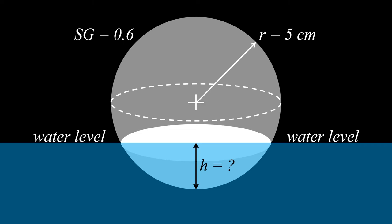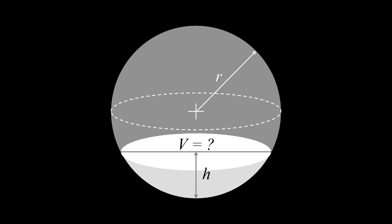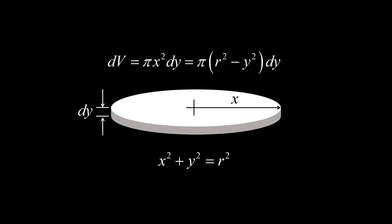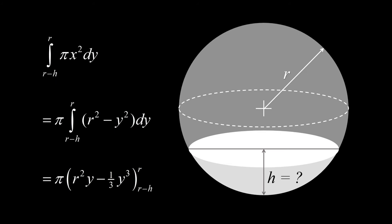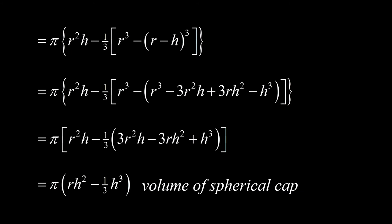Computin muna natin ang volume ng isang spherical cap na may height h. We can do this by slicing the volume into disks with differential thickness dy. Ang differential volume dv ay ang area ng disk times the thickness dy. Ang radius ay x na related kay y at r through the equation for a circle x squared plus y squared equals r squared. Thus, dv equals pi times r squared minus y squared times dy. Summing up the differential volumes from r minus h to r, in other words integrating, we get pi times r h squared minus 1 third h cubed as the volume of the spherical cap with height h and radius r.